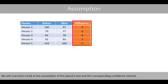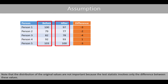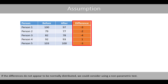We'll now have a look at the assumptions of the paired t-test and the corresponding confidence interval. The major assumption is that the values of the differences should be normally distributed when our sample size is small, since we then cannot rely on the central limit theorem. Note that the distribution of the original values is not important because the test statistic involves only the difference between these values. If the differences do not appear to be normally distributed, we could consider using a non-parametric test.